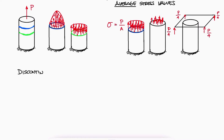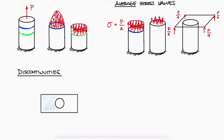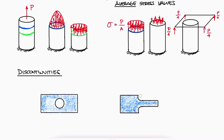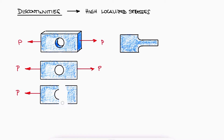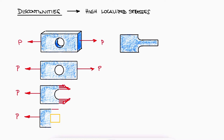However, regardless of how the external loads are applied — point loads versus distributed loads — discontinuities such as a hole or a sudden change in cross-section can give rise to high localized stresses. For example, a flat bar with a circular hole subjected to tension will have a stress distribution in a section passing through the center of the hole that is not constant over the cross-section area. The stresses located towards the middle of the bar are now concentrated around the hole, and the stresses around the hole will be the maximum stresses, substantially higher than the average stress.